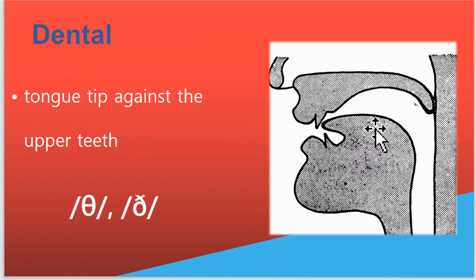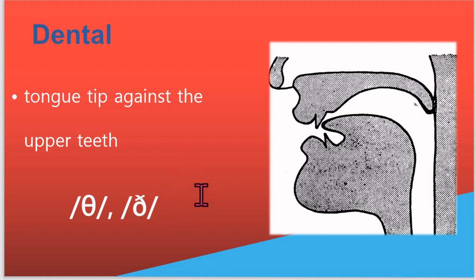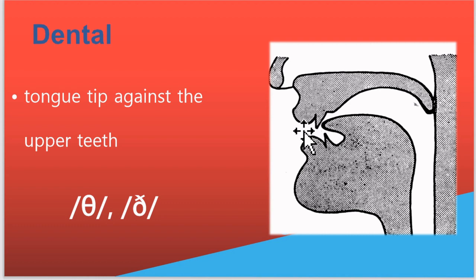Then we have dental sounds, in which the tongue touches or is somewhere near the upper teeth. The two dental sounds in English are the voiceless th and voiced th. In these two sounds, the tongue should actually come out a little bit beyond the teeth, as in 'thing' and 'that'. They are similar to the Malayalam ta and da where the tongue is pressed against the teeth, but in English the tongue comes out.